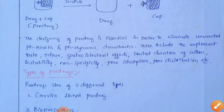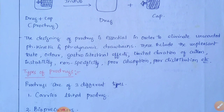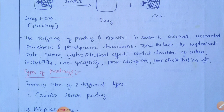Designing of prodrug is essential in order to eliminate unwanted pharmacokinetic and pharmacodynamic drawbacks. Various pharmacokinetic drawbacks include unpleasant taste, odor, gastrointestinal effects, limited duration of action of the drug, instability, non-specificity of the drug molecules, poor absorption, poor distribution, etc. All these parameters can be improved by the concept of prodrug.